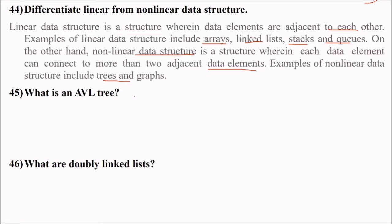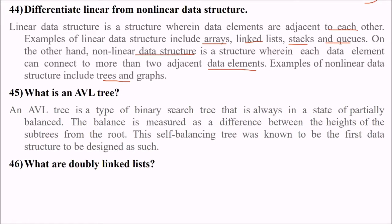What is an AVL tree? This is essentially a binary search tree that has a special balancing condition. Balance is measured as a difference between the height of the subtrees from the root. This self-balancing tree was known as the first data structure to be designed as such. That is why AVL is so famous. If this difference goes to minus one or one, the tree will balance itself.